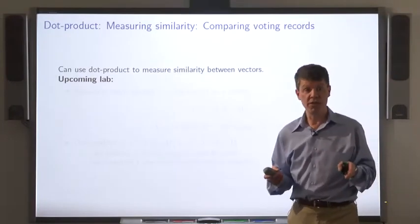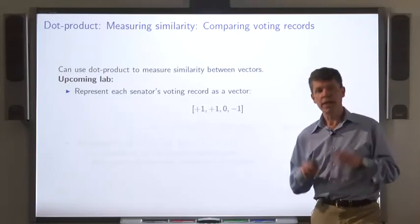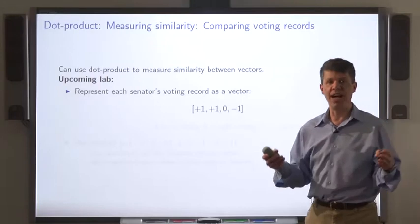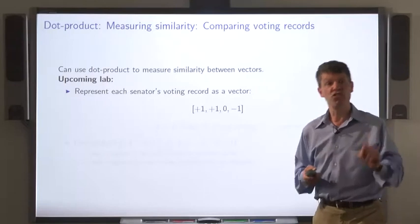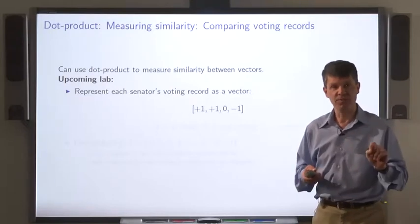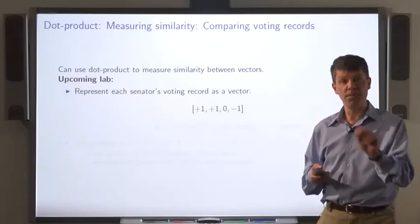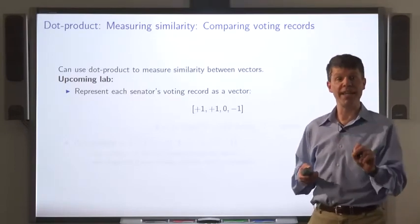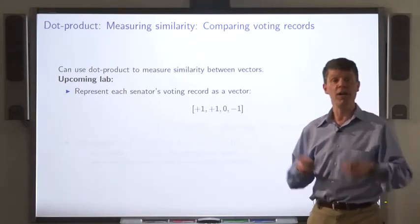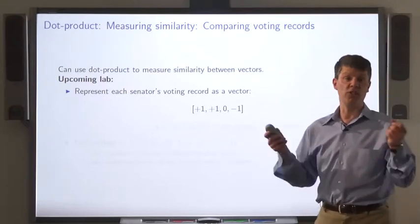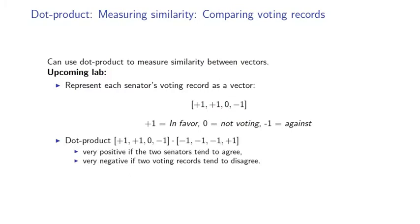Here's another use of dot product to measure the similarity of vectors. Let's say we look at a period of time in which senators are voting on many, many bills. You could represent each senator's voting record as a vector, where for each bill, there's an entry plus one, minus one, or zero, depending on how the senator voted. Say, plus one if the senator voted in favor of a bill, minus one if the senator voted against the bill, and zero if the senator abstained. So we have a vector representing how the senator voted on many bills.